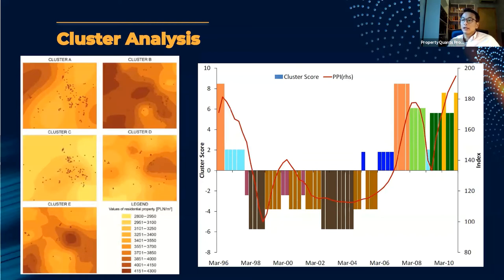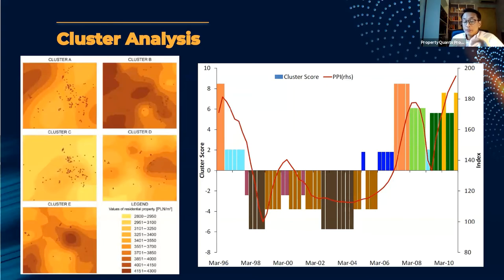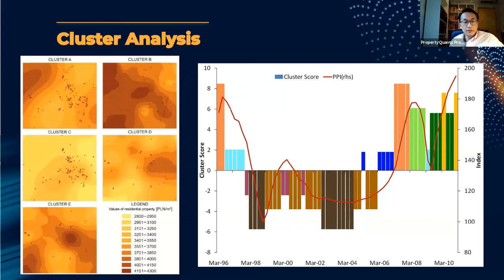You can look at property characteristics, pricing, and how price performance has varied over time to build these clusters or groups of similar properties. You can understand the segments in the market, and in terms of building a pricing model you can implement a model tree approach — modeling one cluster separately from another — which in some cases turns out to be a lot more accurate.